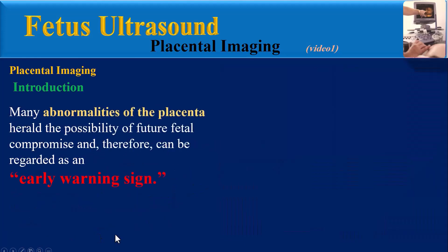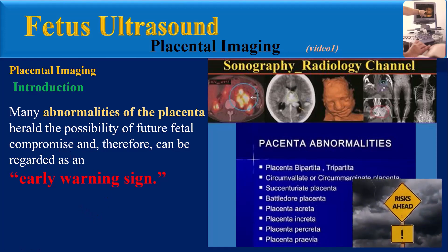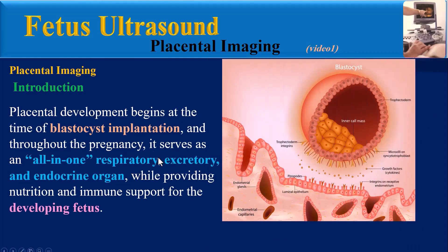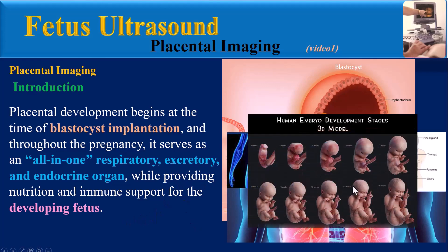Many abnormalities of the placenta herald the possibility of future fetal compromise and therefore can be regarded as an early warning sign. Placental development begins at the time of blastocyte implantation, and throughout pregnancy it serves as an all-in-one respiratory, excretory, and endocrine organ, while providing nutrition and immune support for the developing fetus.